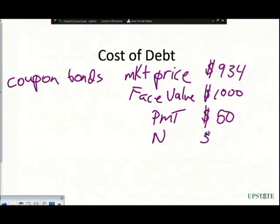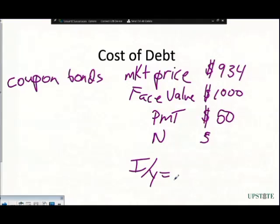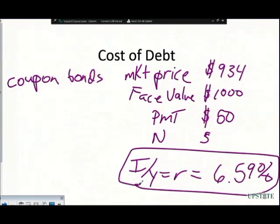What we can do is substitute this in and figure out what the market rate on those bonds is. Using the methods we've already seen, this is going to come up with an interest rate — I over Y, or R — of basically 6.59%. So this tells us that, given a market price of $934, this is what the market is actually estimating the riskiness of these bonds to be. We come up with 6.59%, which we can use as a component in our cost of debt.